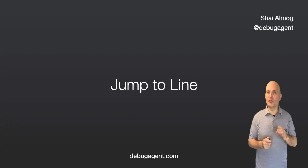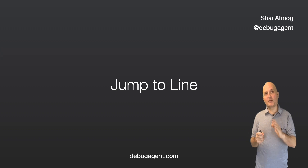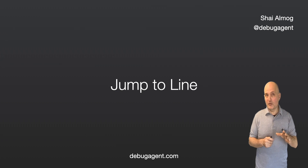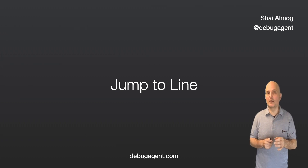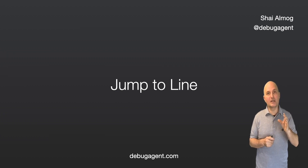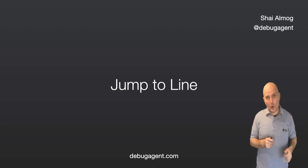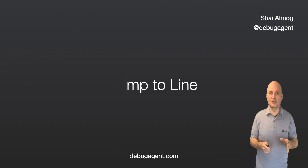Jump to line requires a plugin for IntelliJ. It lets us drag the execution pointer to an arbitrary location. Have a bug? Just drag the execution back and try again. Need to skip a line of code because your app is in a problematic state but you still want to debug? Drag forward. This is a fantastic killer feature when you need it.